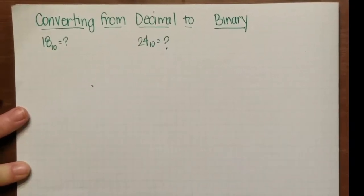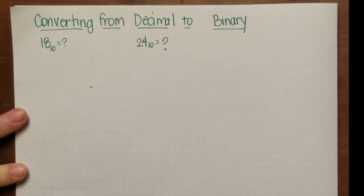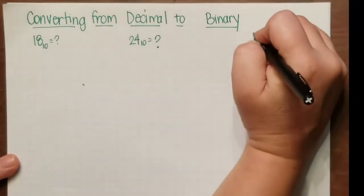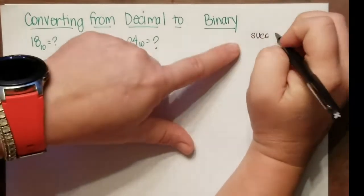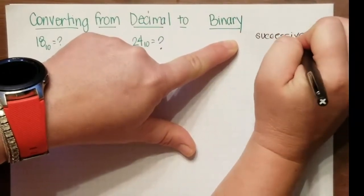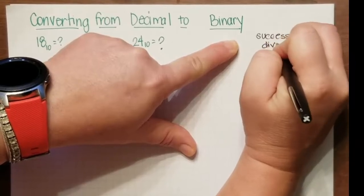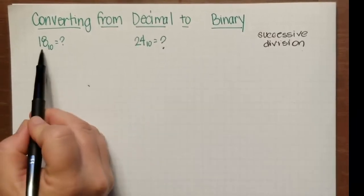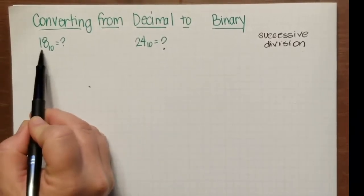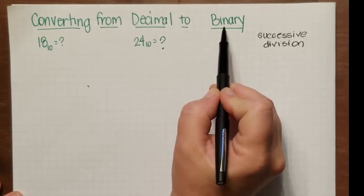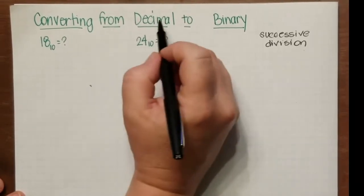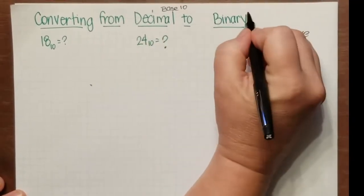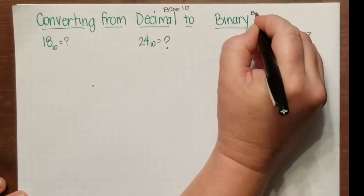Okay, so now I'm going to show you how to go from decimal to binary. This process is called successive division. What we do is we take the number we want to convert and we divide it by the number that represents the base.